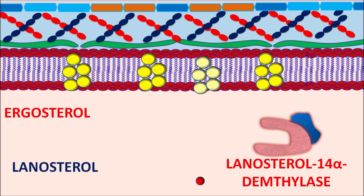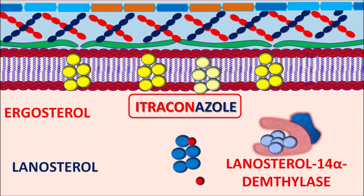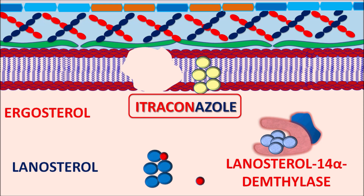In this step, one methyl group is removed from the 14th position which converts lanosterol into ergosterol and it is incorporated into the fungal membrane. Itraconazole inhibits ergosterol synthesis within the fungal cell by binding to and inactivating the lanosterol 14-alpha demethylase enzyme. In the presence of itraconazole, lanosterol cannot be converted into ergosterol, reducing ergosterol levels, which modifies cell rigidity resulting in increased breakage and leakage of the cell membrane, causing fungicidal activity.